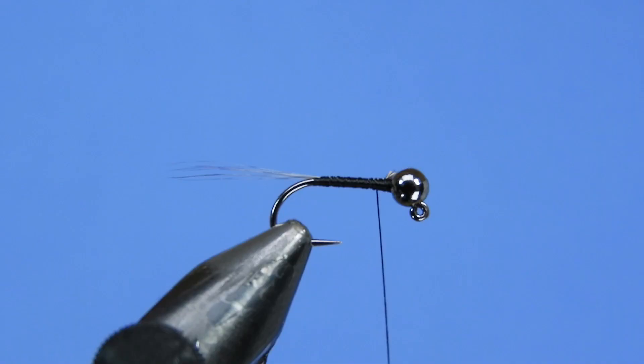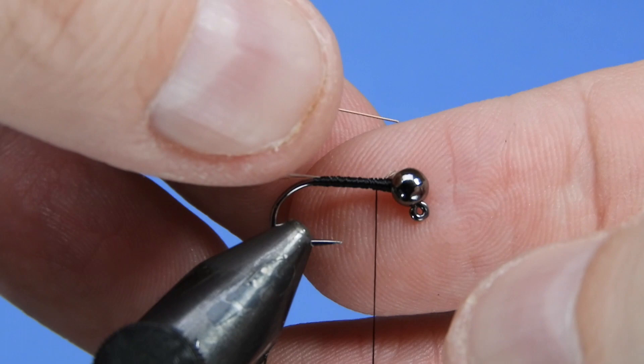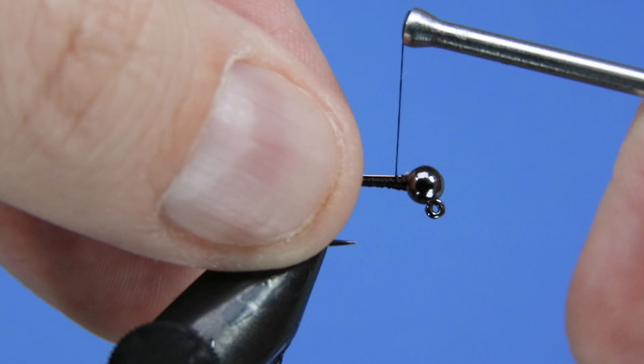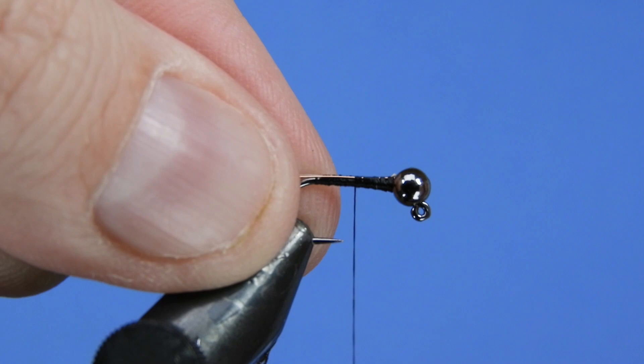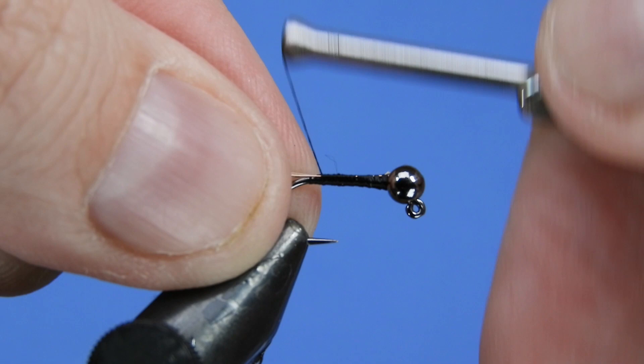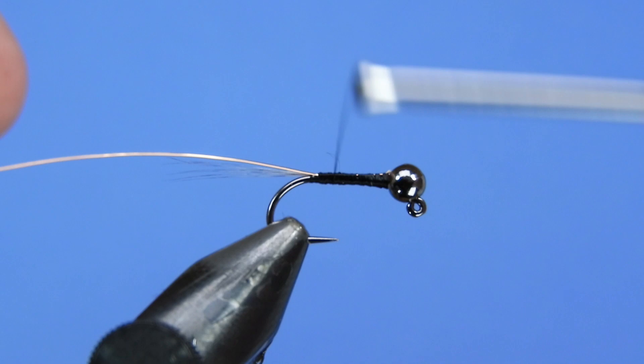I'm going to add some fine copper wire or some small copper wire here, and I'm just going to tie that along the side of the shank. You can stick the tag end of that inside the relief of the slot in the bead and we'll just tie that in along the side there. Just want to again try and keep touching wraps as much as possible. We want to try and keep the body smooth as much as we can.